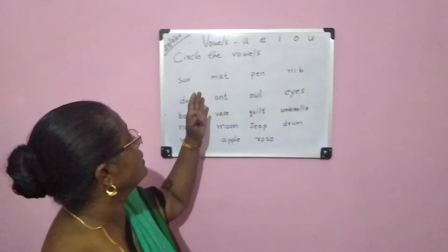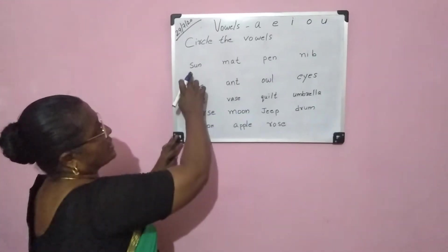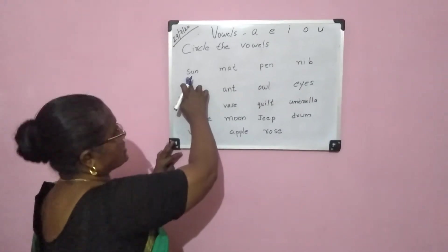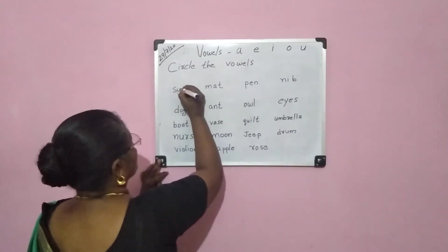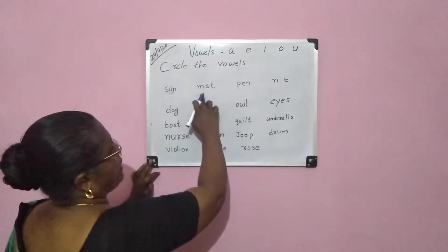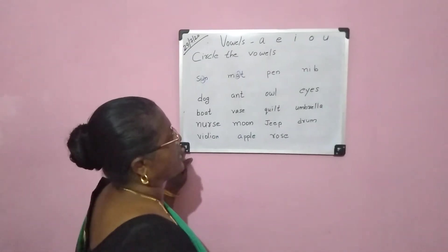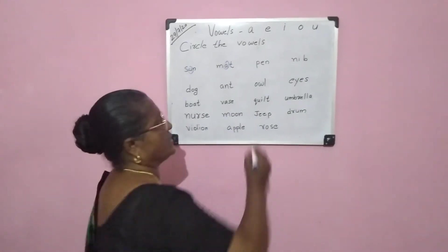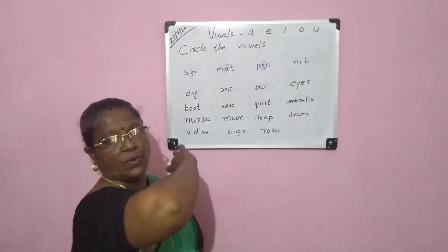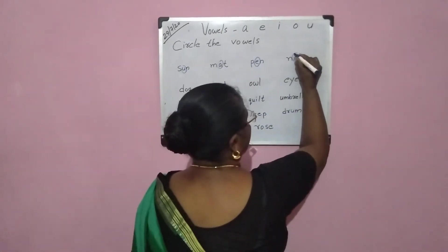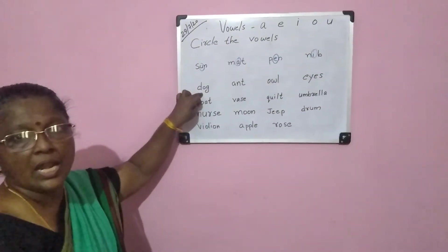Now I will give you some words. You have to spot the vowels. First word: sun — U vowel. Mat — middle vowel A. Pen — E vowel. Nib — middle vowel I. Next word: dog — middle vowel O.